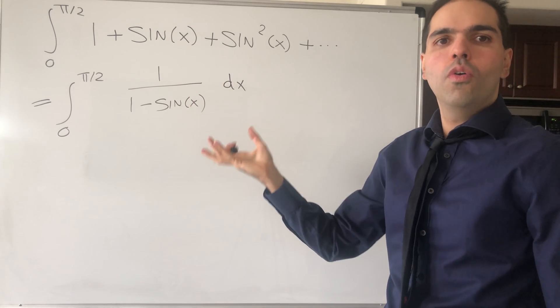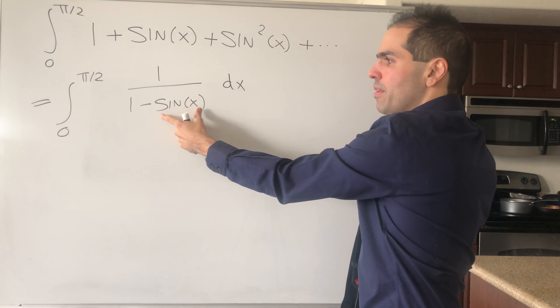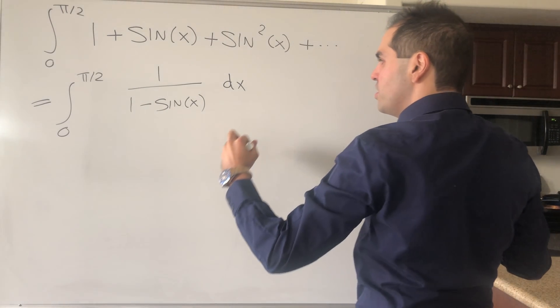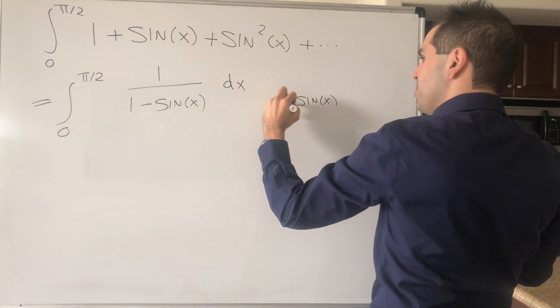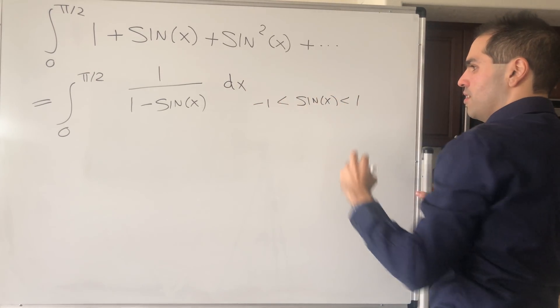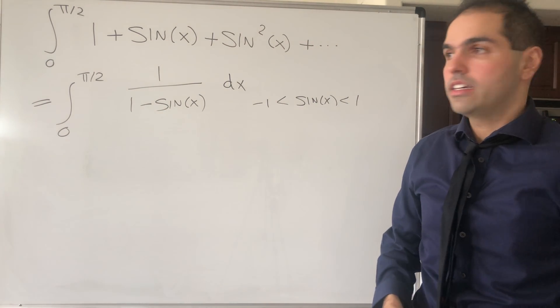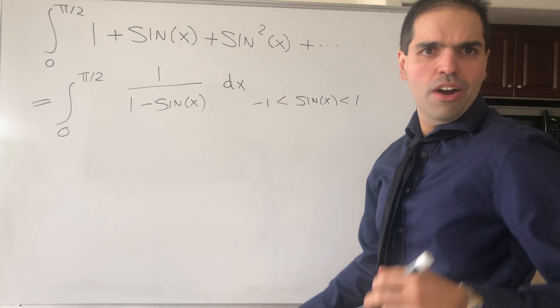There's one important detail. Remember the geometric series is only valid when the raison is between -1 and 1, but we precisely have that because on the interval 0 to π/2, sin(x) is between -1 and 1, and in fact strictly between the two because we're not really at the endpoints in the integral.